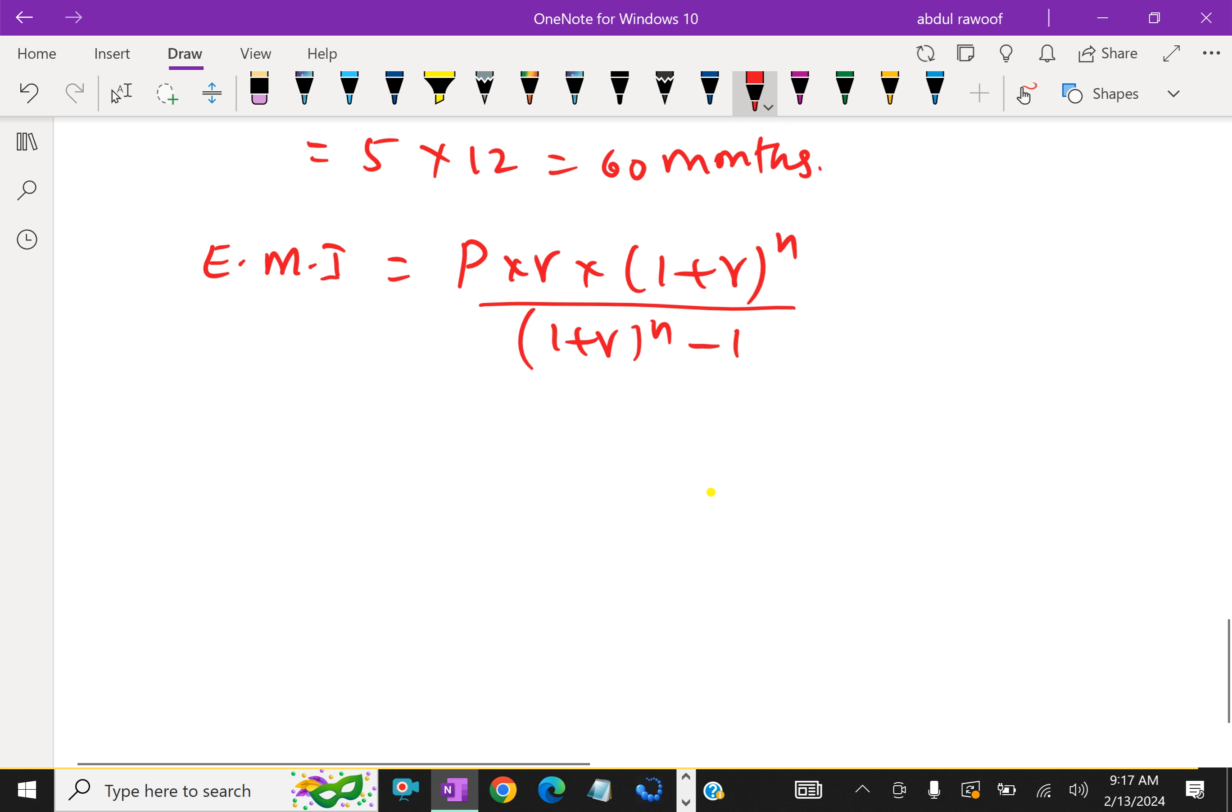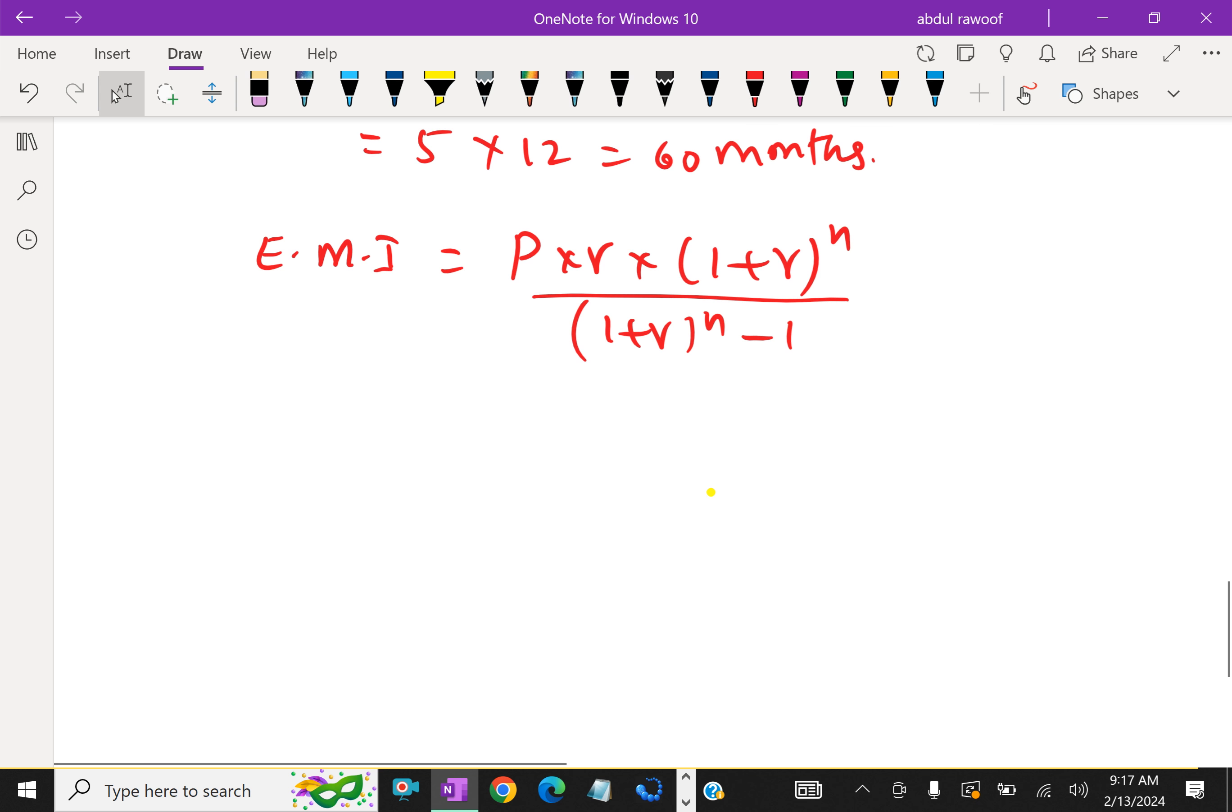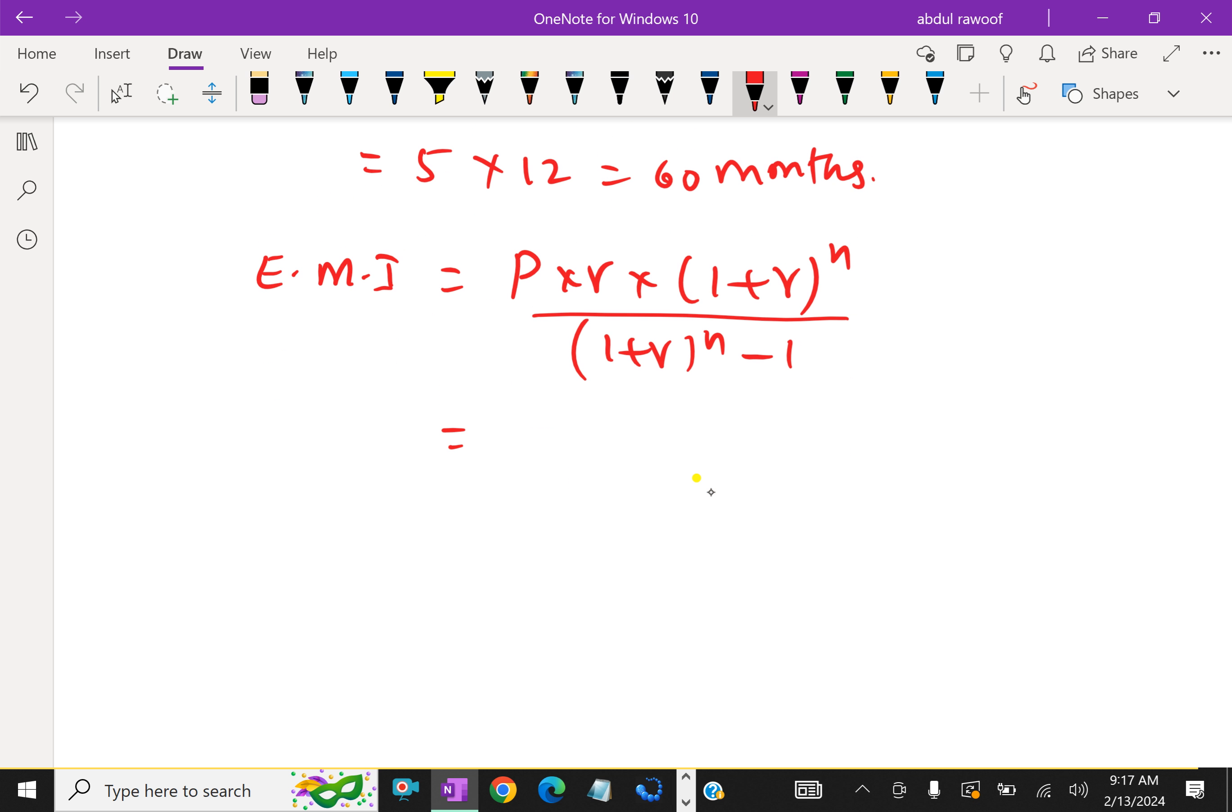Now we will apply the values here. So P equals 4 lakhs, this is R. R is 0.01 into (1 plus 0.01) to the power 60 over...